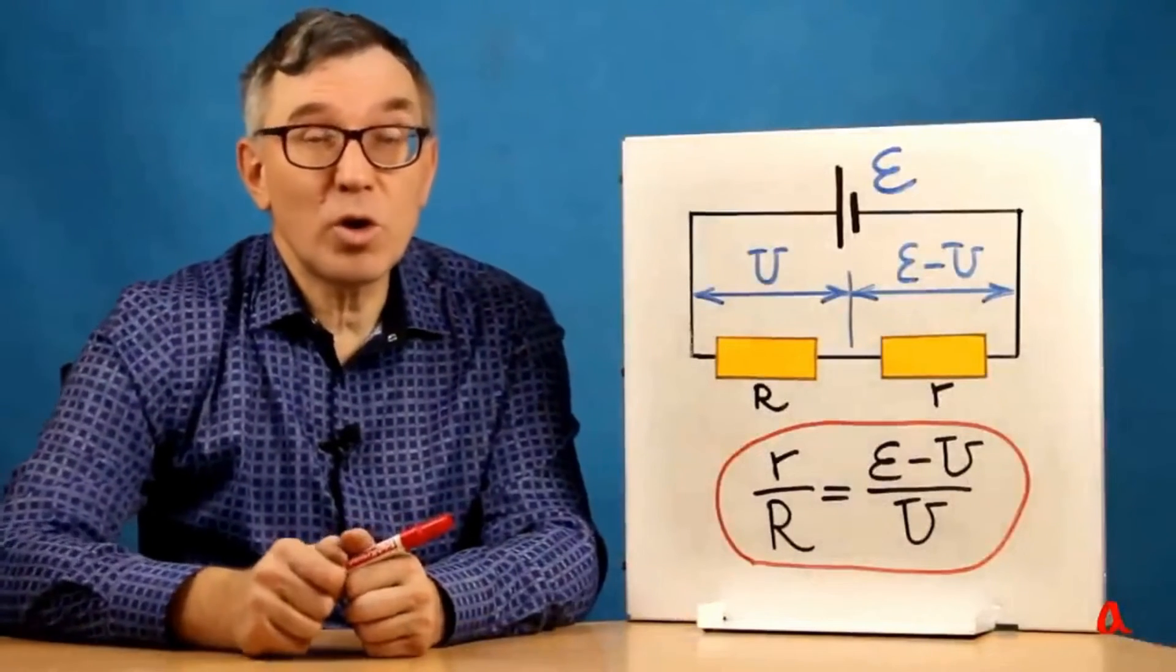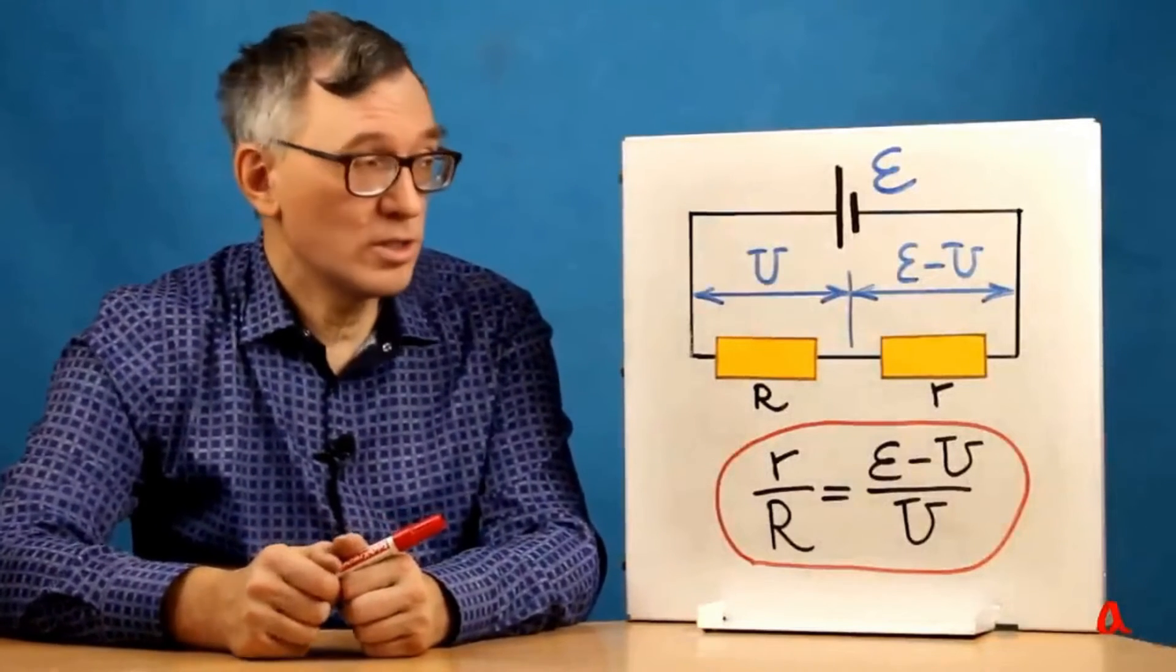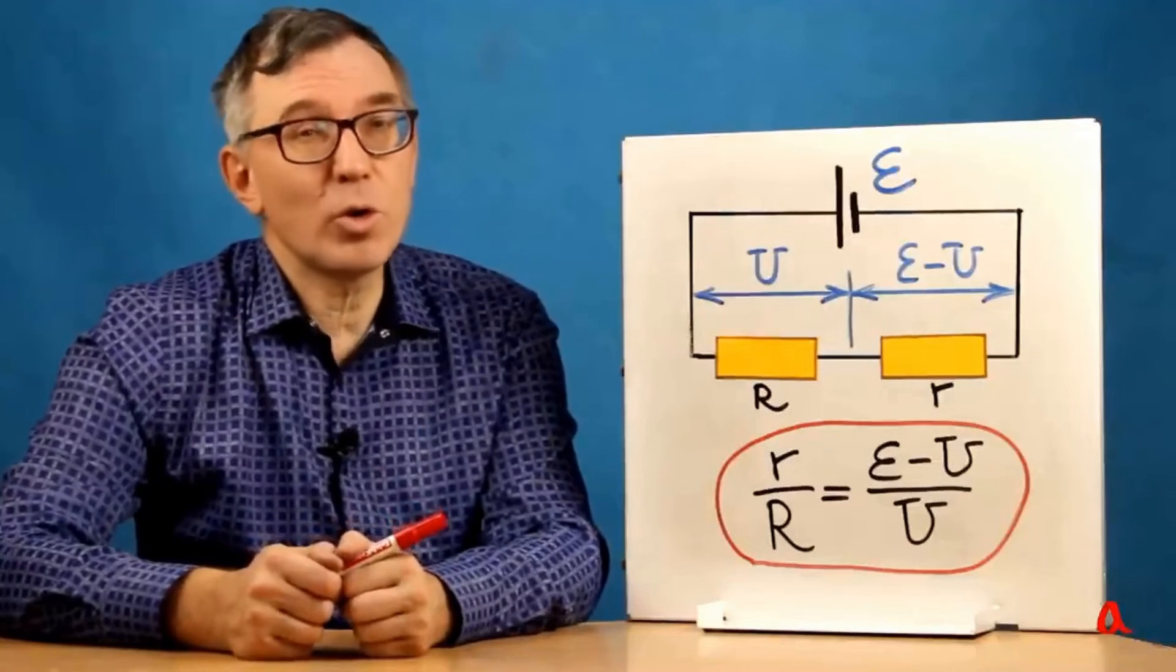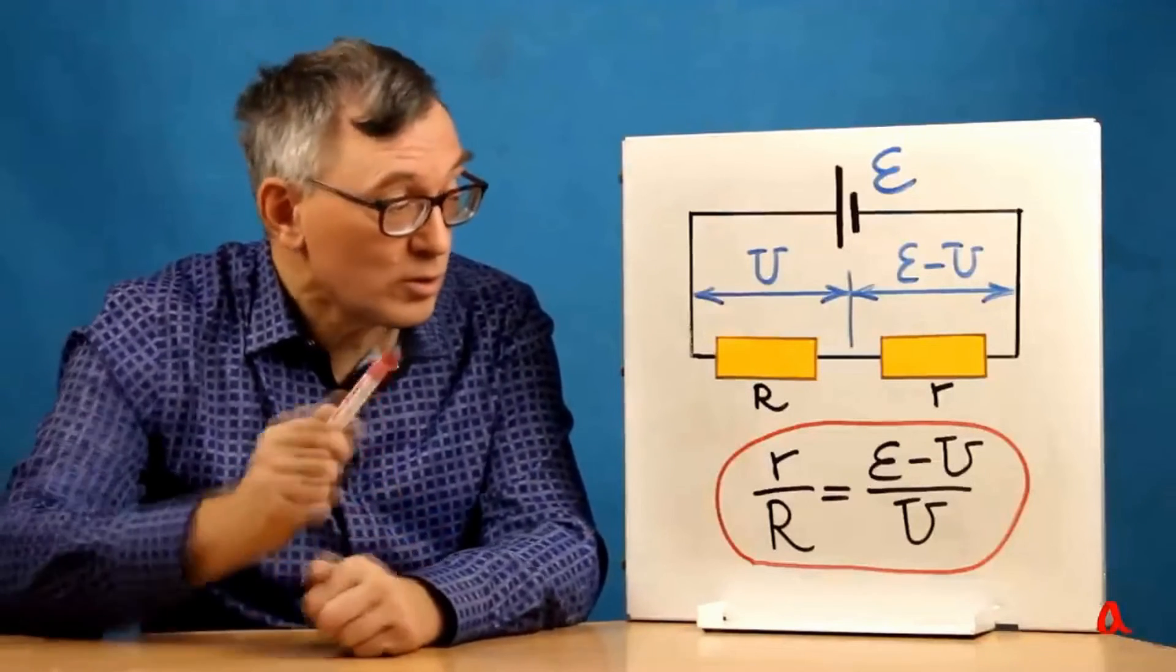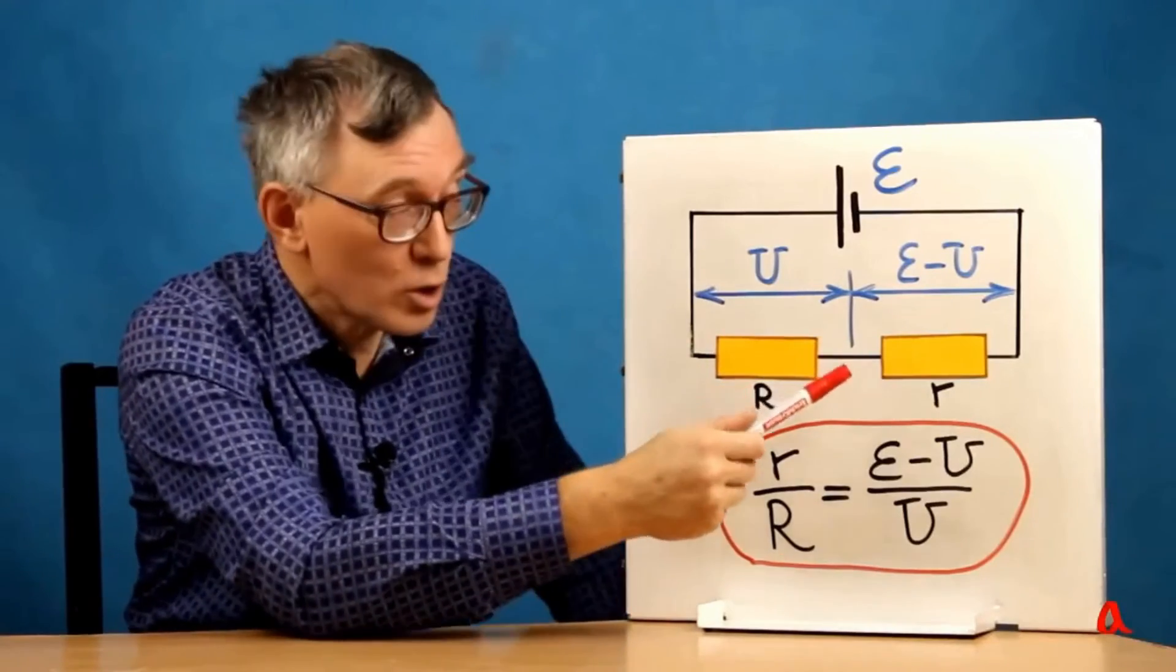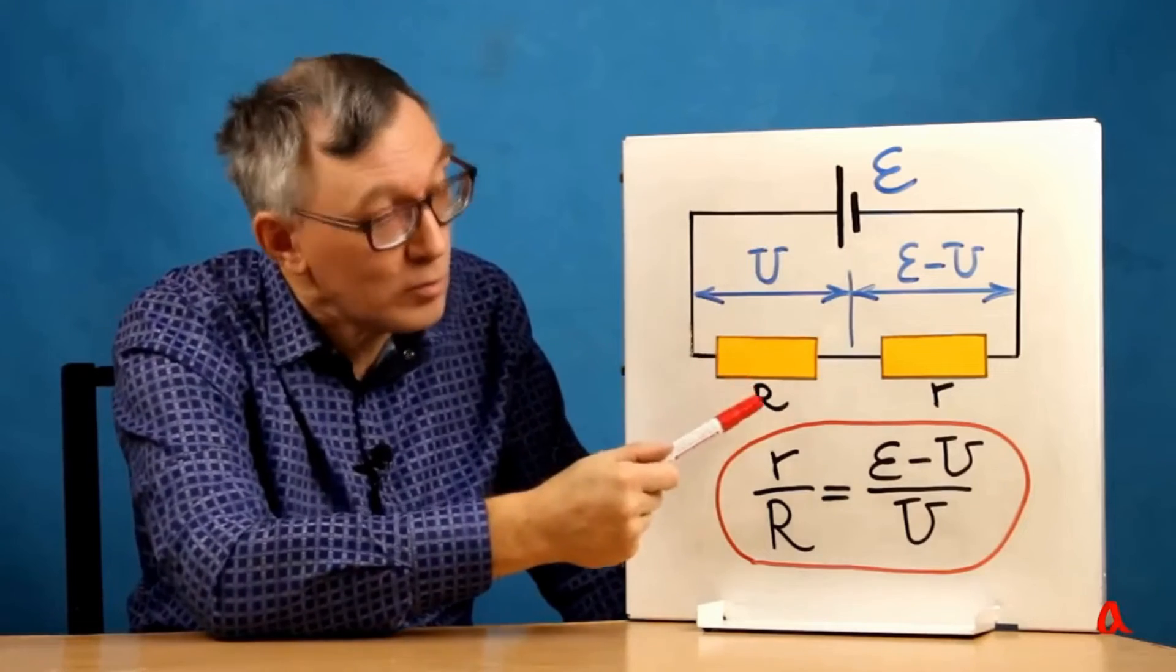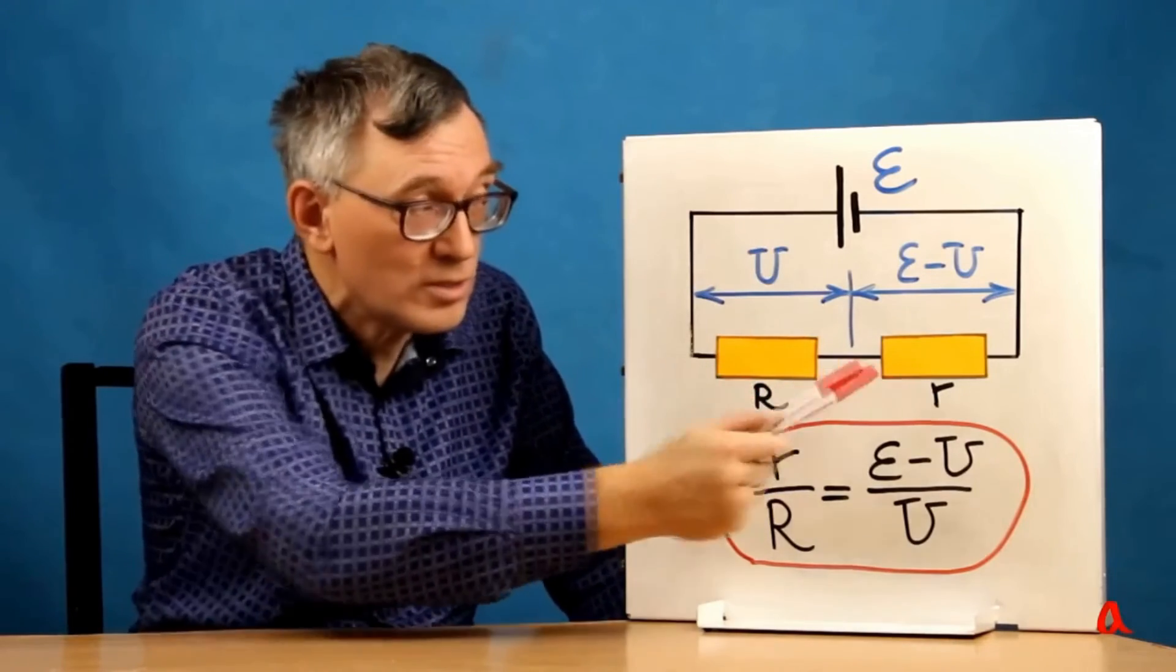We determine the internal resistance of the source by measuring the current and voltage across it. But it turns out that it is possible to do with just measuring the voltage. The load resistance and the internal resistance of the source are connected in series. So the EMF is distributed proportionally to these resistances.